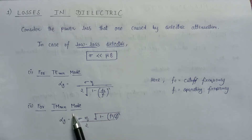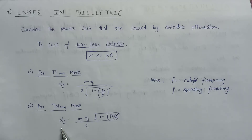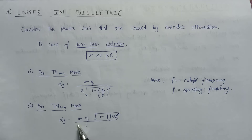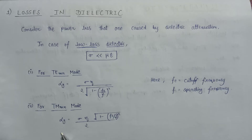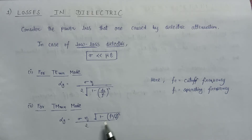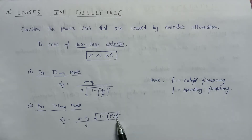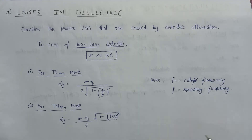The second mode supported by the rectangular waveguide is the transverse magnetic (TM) mode. In the TM mode, the attenuation constant alpha_g is given by: alpha_g = (sigma * eta) / (2 * sqrt(1 - (fc/f)^2)). Here, eta is the intrinsic impedance, sigma is the conductivity, fc is the cutoff frequency, and f is the operating frequency. This covers the losses associated with the dielectric.